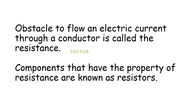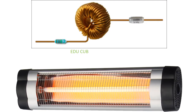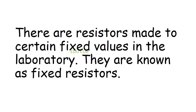Next, we look at permanent resistors. The obstacle to the flow of electric current through a conductor is called resistance. Components that have the property of resistance are known as resistors. Copper wire is used to connect circuits because its resistance is very low. The resistance of wires made by nichrome and manganin is very high, so wires made of these metals are used to make resistors.